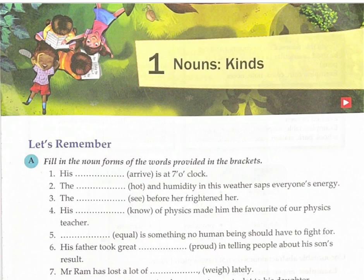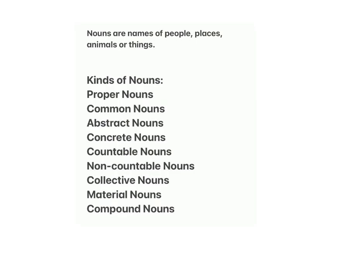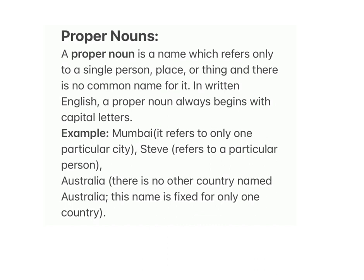Lesson one: Nouns. Nouns are names of people, places, animals or things. Kinds of nouns: proper nouns, common nouns, abstract nouns, concrete nouns, countable nouns, non-countable nouns, collective nouns, material nouns, compound nouns.